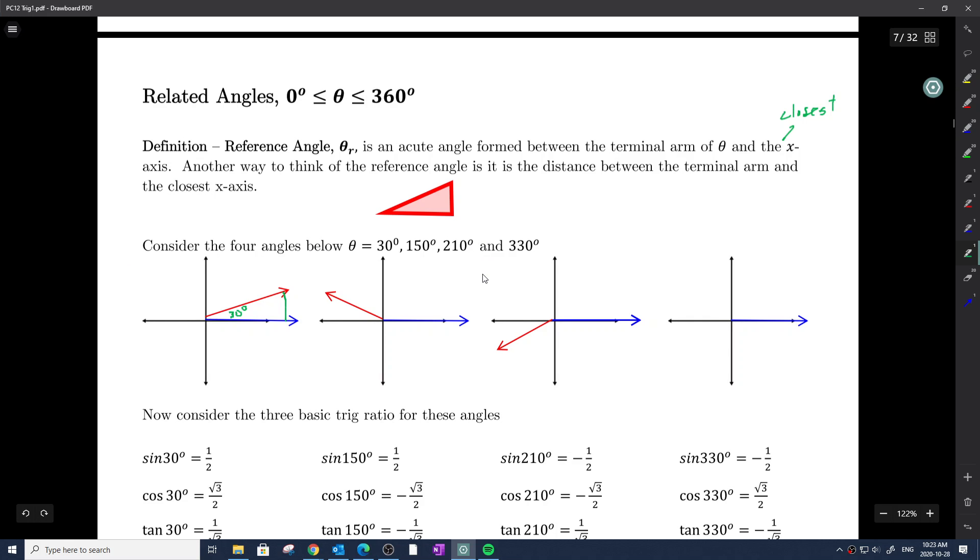Now consider the following four angles. This would look like 150 degrees here. If I ask myself how far away from the closest x-axis, the reference angle to that is 30 degrees.